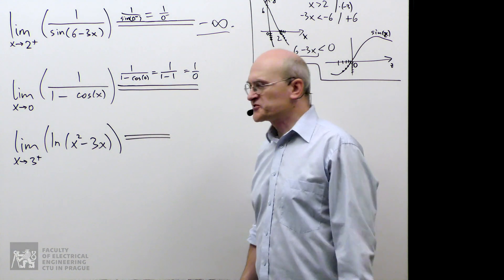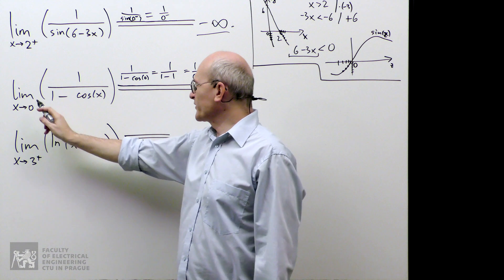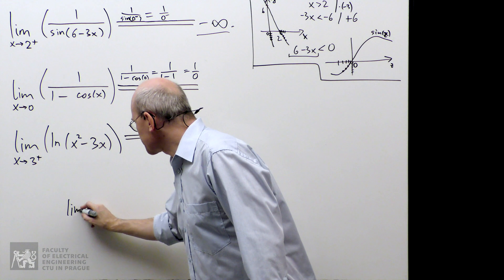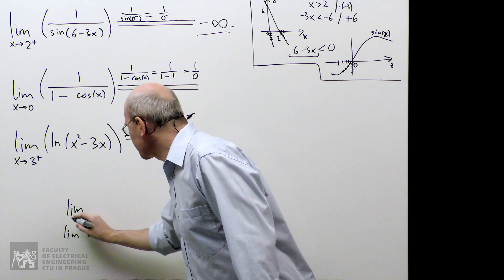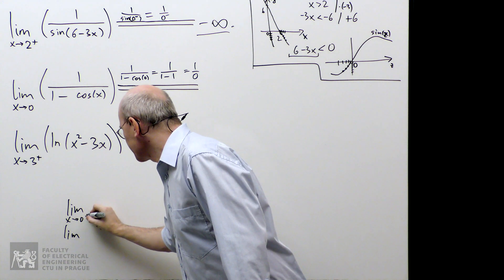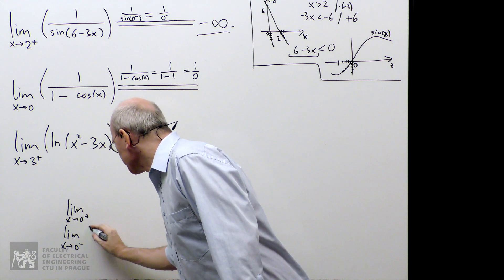Normally, I would do the following procedure. If I don't have one-sided information, I can introduce it artificially. I would consider two limits. In one limit, I would send x to 0 from the right, and in the other limit, I would send it there from the left.